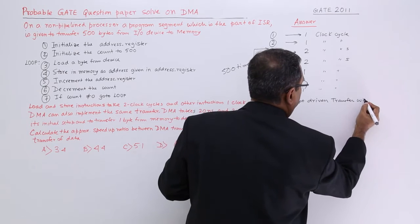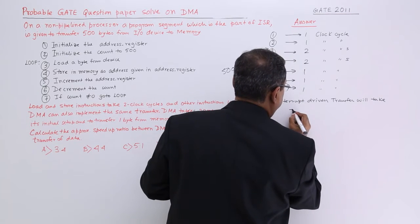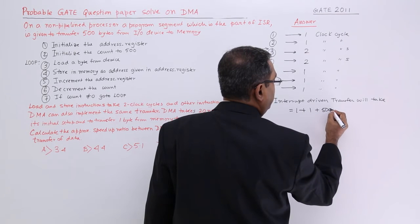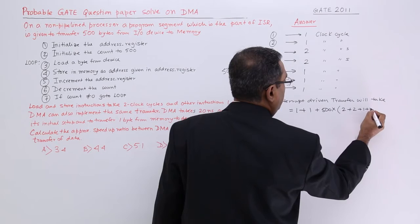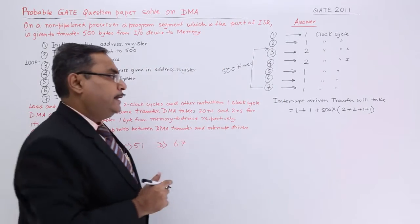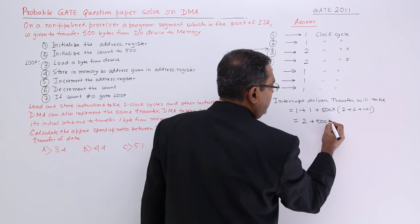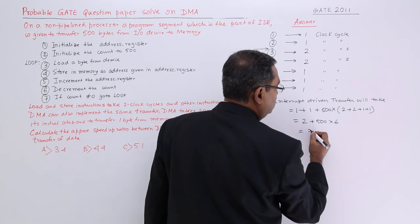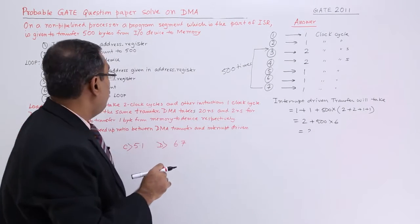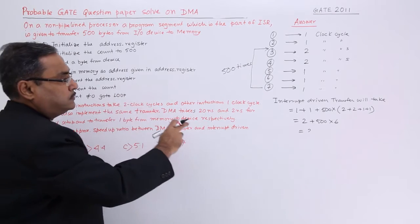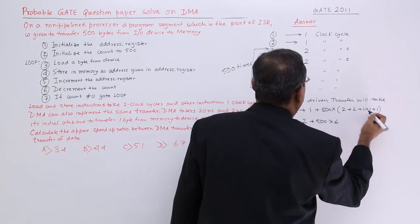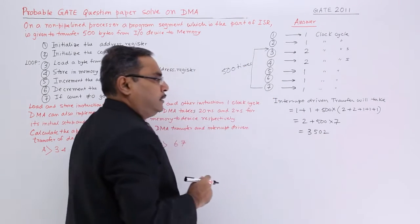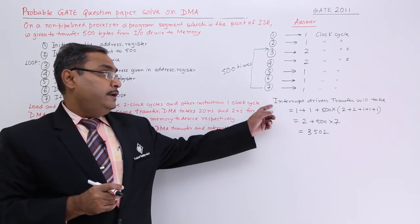For the interrupt-driven transfer, the two initialize instructions outside the loop take 1 + 1 = 2 clock cycles. Inside the loop: load takes 2, store takes 2, increment takes 1, decrement takes 1, and branch takes 1, giving 7 clock cycles per iteration. So total = 2 + 500 × (2 + 2 + 1 + 1 + 1) = 2 + 500 × 7 = 2 + 3500 = 3502 clock cycles, or 3502 nanoseconds.